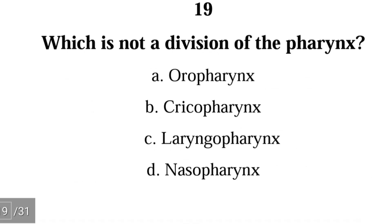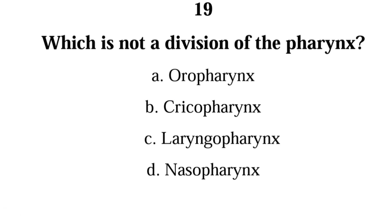Number 19. Which is not a division of the pharynx? A. oropharynx, B. cricopharynx, C. laryngopharynx, D. nasopharynx. The correct answer is B. The pharynx is divided into the nasopharynx, oropharynx, and laryngopharynx. Cricopharynx is not a division of the pharynx.